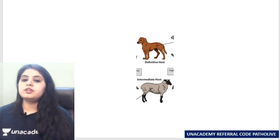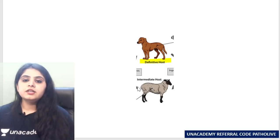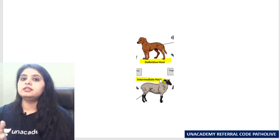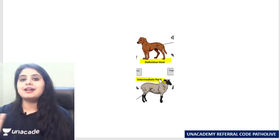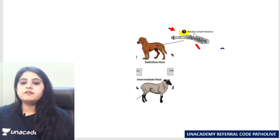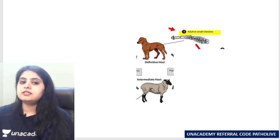Let us begin with Echinococcus granulosis. The definitive host is the dog, wolf, or fox; the intermediate host is sheep or cattle, and the life cycle is predominantly between them. We come in at the end because we get accidentally infected. In the dog, there is development of adults in the small intestine.